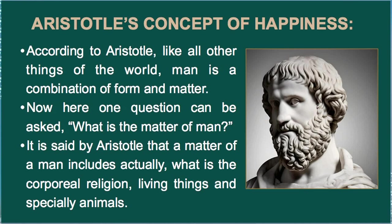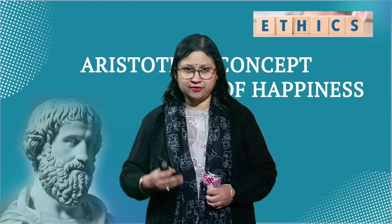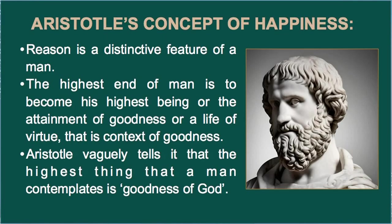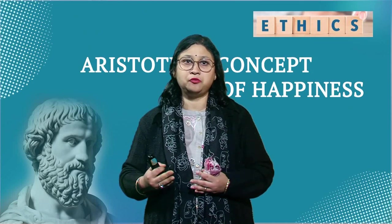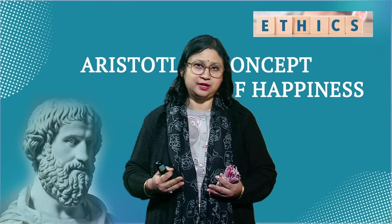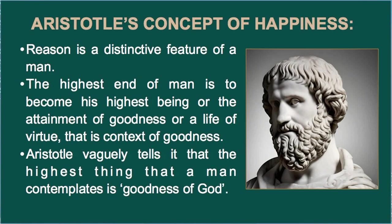One question can be asked: what is the matter of man? Aristotle says that the matter of a man includes the corporeal dimension — living things and especially animals. That is why the form of man molds and transforms his physiochemical activities, vegetative functions, sex and the senses in man. According to Aristotle, this form is nothing but reason. Reason is a distinctive feature of man — a particular quality which only human beings possess; other animals do not have this quality called reason.